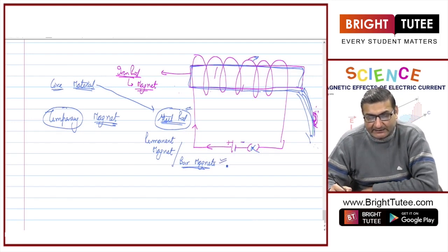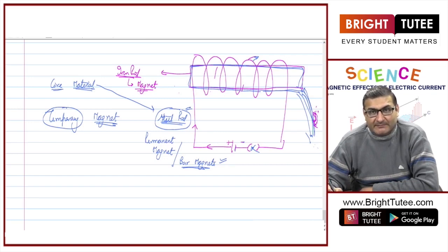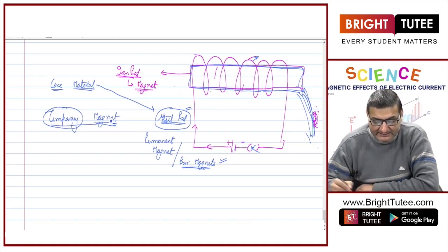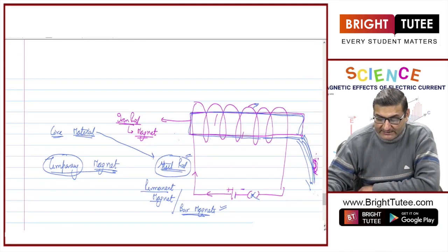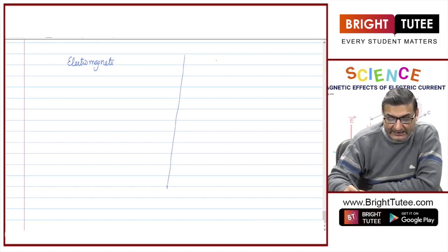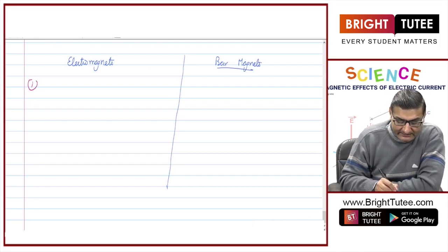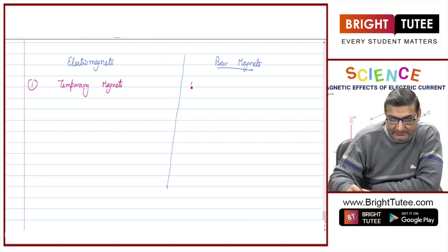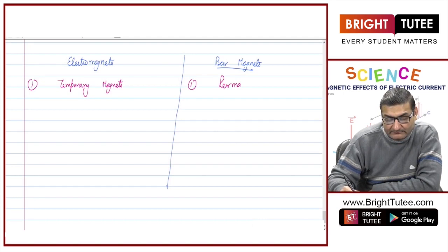The bar magnets we normally see in our labs are not connected to any wire — they are permanent magnets and do not require electricity to maintain their magnetism. There is a basic difference between these temporary magnets and bar magnets. Temporary magnets are also termed as electromagnets because they are made magnets due to electricity, whereas bar magnets are permanent magnets.